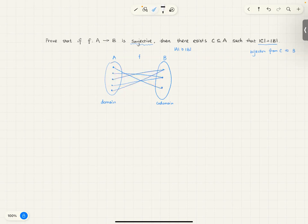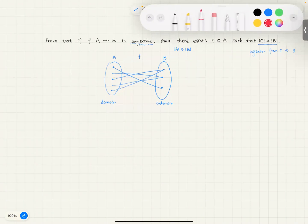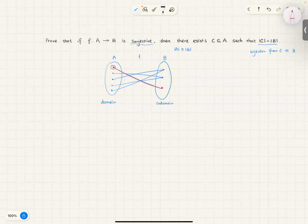So, to have a bijection, what I need to do is basically, for each element in the codomain, I only want one element mapped to it. So, for example, let me use red color. For this one, I'm only going to pick this one that mapped to it, so this element is going to be part of my C. And for this element, there are two things mapped to it, so I'm only going to pick one of it, so let's pick this one. And for this element, there are two elements mapped to it, so let's only pick one as well.